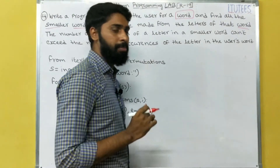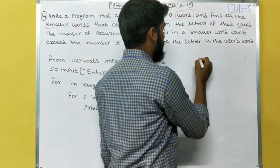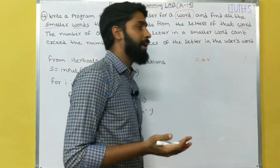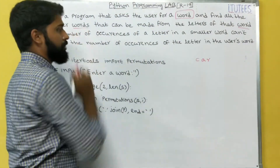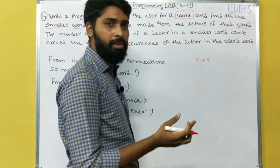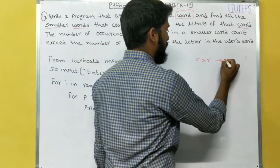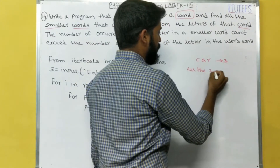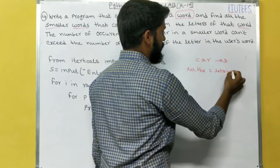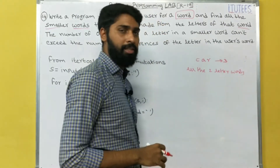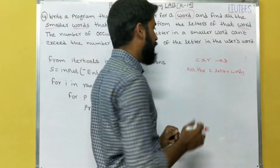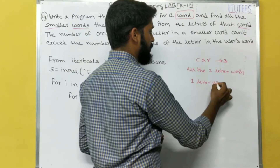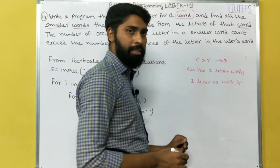First we discuss about the problem. For example, the word is 'car'. We are going to find the smaller words. Smaller words means the length is less than the input word. So all the two-letter words we consider as smaller words. We cannot consider a single letter as a word.